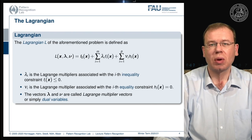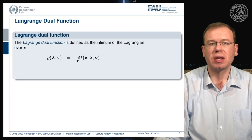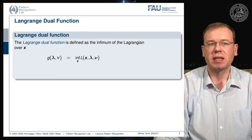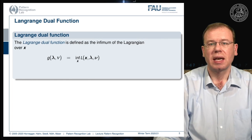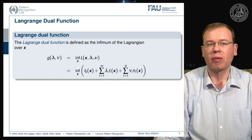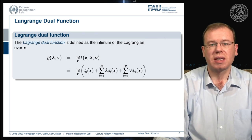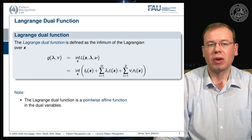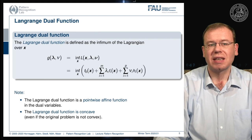Now let's look into the Lagrange dual function. In the Lagrange dual function we essentially get rid of x by picking x in a way that gives the maximum lower bound of our Lagrangian. We write this as g(lambda, nu) = inf over x of the Lagrangian, which expands to the infimum over f0(x) plus the inequality constraints plus the equality constraints. Notably, the Lagrange dual function is a pointwise affine function in the dual variables, and it is concave — the infimum makes our function concave even if the original problem is not convex.